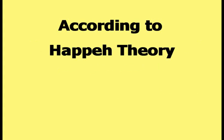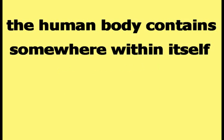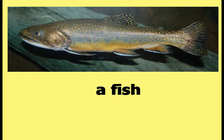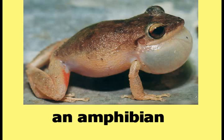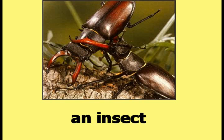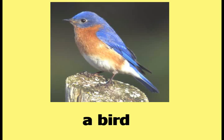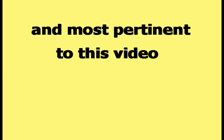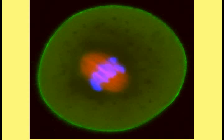According to Happy Theory, the human body contains somewhere within itself one or more characteristics of a fish, an amphibian, a reptile, an insect, a bird, a mammal, and most pertinent to this video, the original single cell floating in the ocean.